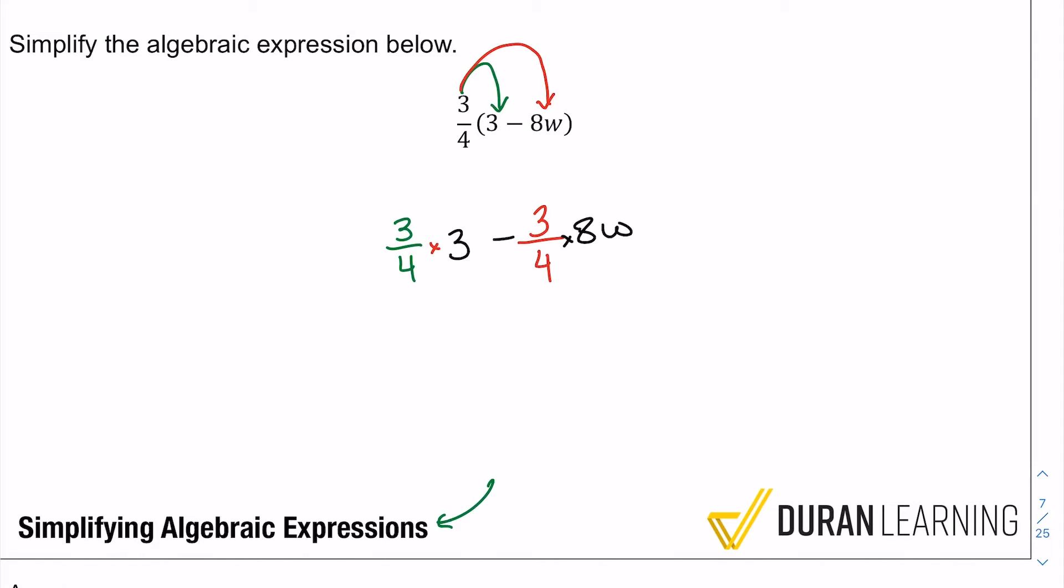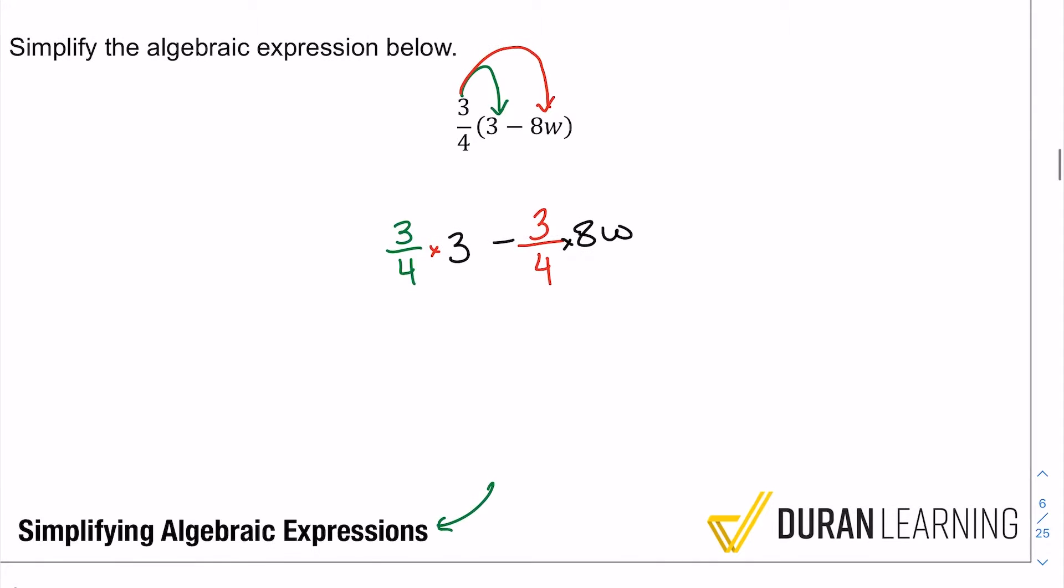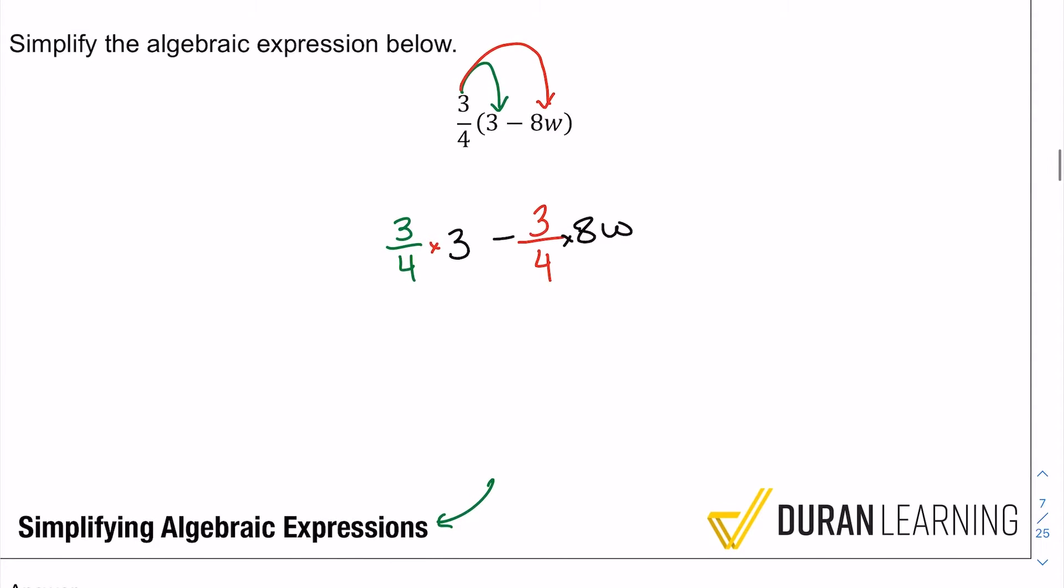And what we have to understand to get this done flawlessly is that three is the same thing as three over one. Anything is the same as itself divided by one, so there we are.